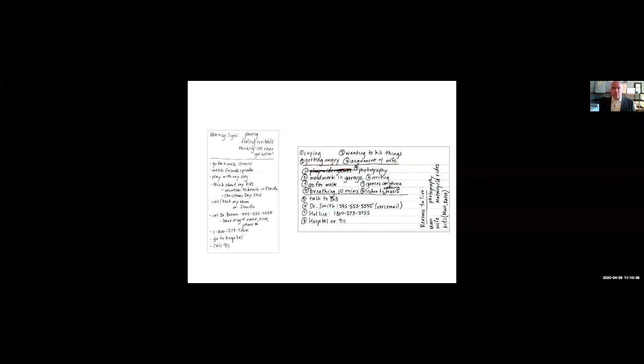We write plans typically on index cards — we don't use forms. Handwriting these plans on index cards has a lot of benefits. They seem to be less likely to be lost and are more convenient for individuals. It also conveys a sense of personalization to the suicidal individual; they feel a greater sense of ownership, that the plan has been developed for them and is not just an administrative procedure where we're filling in the blanks. We'll circle back to these two plans as we go through the presentation.